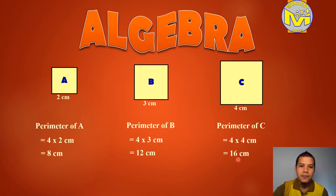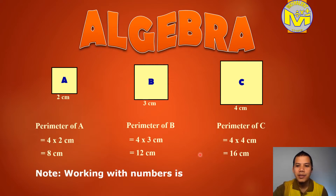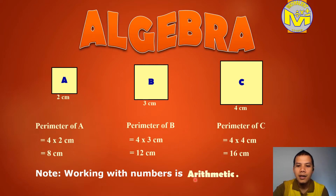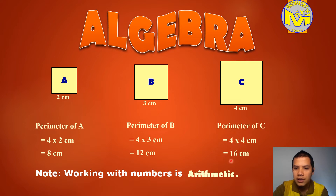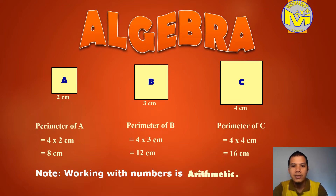Is that algebra? No, not yet. This is only arithmetic. What is arithmetic? Working with numbers is arithmetic. Arithmetic means we only use numbers. Look at this: 4 times 2 is 8, 4 times 3 is 12, 4 times 4 is 16. So that is arithmetic. So what is algebra? Let's go to the next slide.